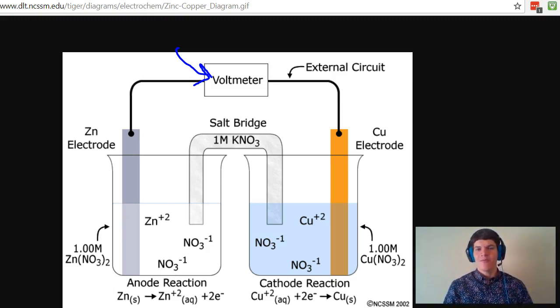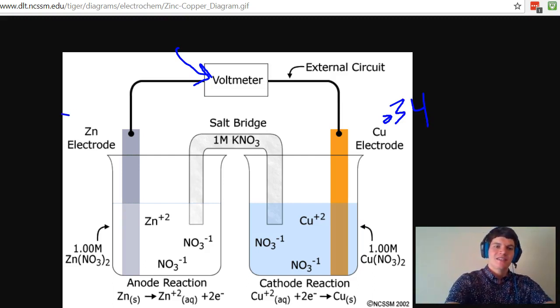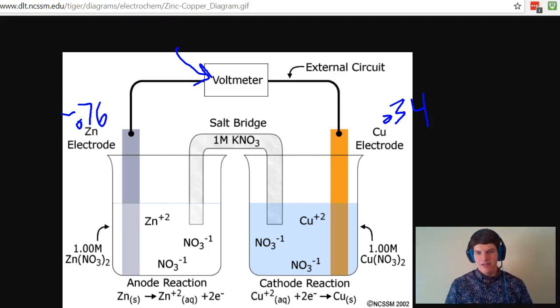And in order to tell which species will be reduced in a spontaneous situation, you need to take a look at the reduction potentials. We're told that the reduction potential for copper is 0.34 and the reduction potential for zinc is negative 0.76. The higher reduction potential is the one that is more likely to be reduced.